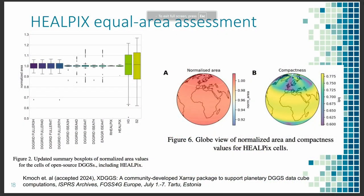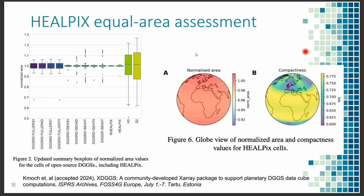One interesting bit we also did in the paper: I had a paper a few years back assessing the areal distortions of different DGGS systems, and at that time I missed HEALPix, so we added that in this paper as well. As you can see, HEALPix performs really, really well — similar to the hexagonal ones. That's pretty good and it's documented in the article.